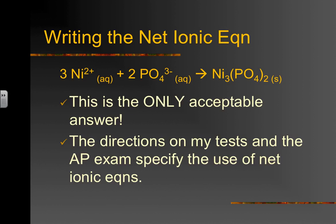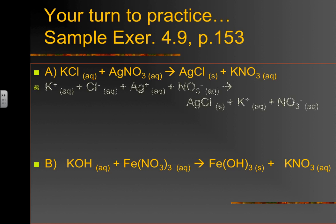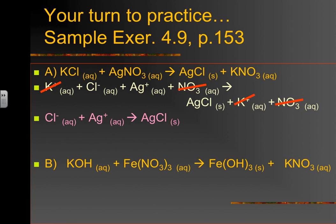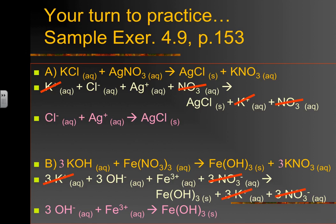Read the directions carefully — both the AP test and my test will specify that you need a net ionic equation. Now it's your turn: page 153, sample exercise. Try to write the net ionic equations, then we'll check answers. For A, here's the complete ionic equation — cancel the spectators — and the final net ionic equation is in pink. For B, you must balance it first — notice the threes. Here is the complete ionic equation; potassiums and nitrates cancel, and the final answer is in pink.